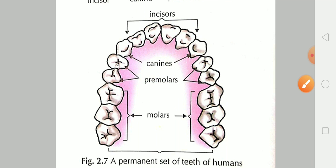To summarize one jaw of permanent teeth: first are 4 incisors, then 2 canines, then 4 premolars, and lastly 6 molars — making 16 total in one jaw.